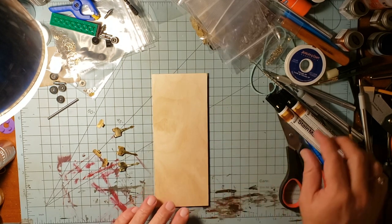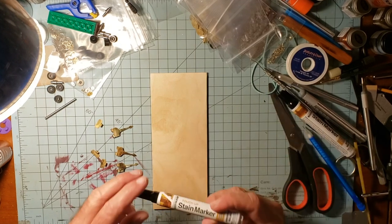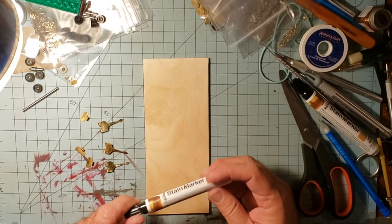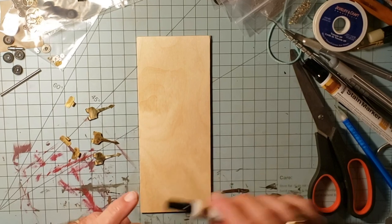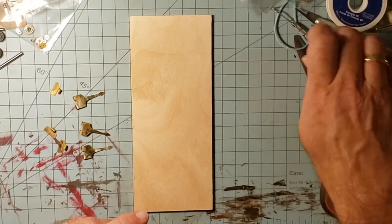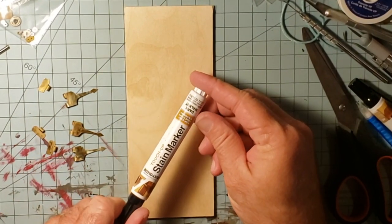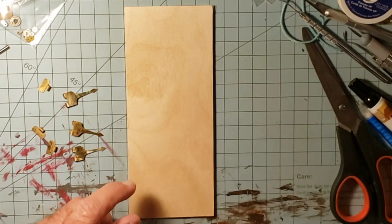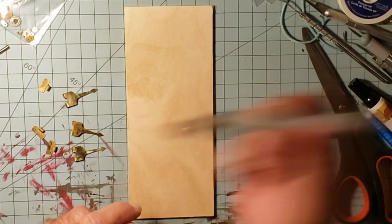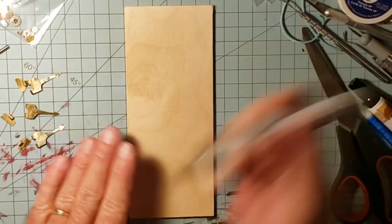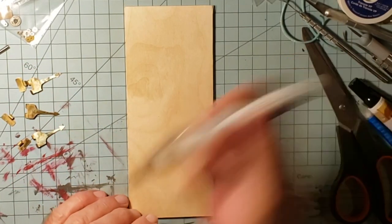First I'm going to start off by staining the door. I found these stain markers at Walmart the other day on their clearance rack. I think I paid like two bucks for them. This one here is a dark walnut, which is what I'm going to be using. The other one was an American walnut, which was a little bit lighter, so I'm going to go with the darker color on this.